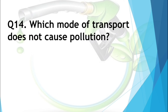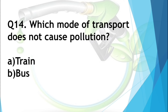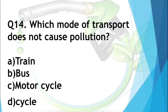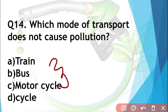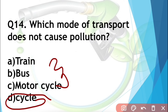Question number fourteen: Which mode of transport does not cause pollution? Options are train, bus, motorcycle, or cycle. Train, bus, and motorcycle all use fuel such as petrol, diesel, or coal. A cycle is a vehicle that does not use any fuel and does not cause any pollution. So cycle is the answer.